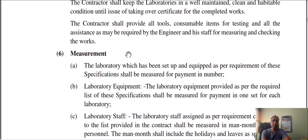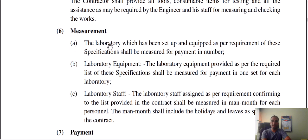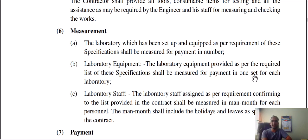Regarding measurement and payment: the laboratory which has been set up and equipped as per the requirements shall be measured and payment made by number — as one set. You will need to specify what you need — CTM, CIPs, or bitumen testing — and these can be measured as one set. You will need to know the standards of compliance and the standard norms, as well as the rate analysis.